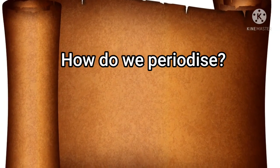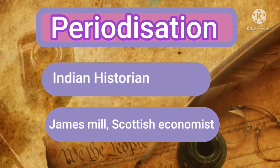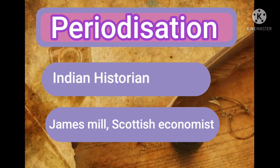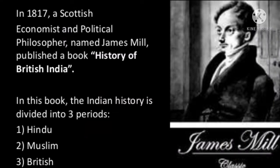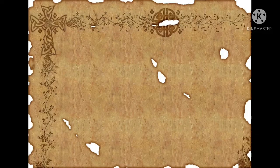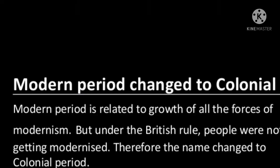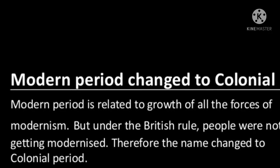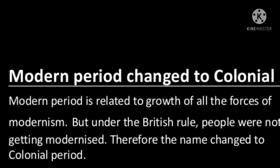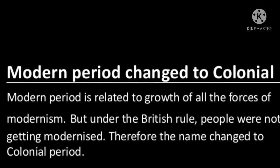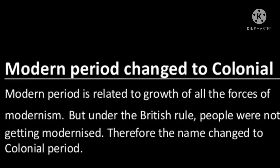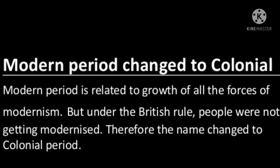How do we periodize? The periodization of history was done by Indian historians or James Mill. According to James Mill, the periodization of history is divided into ancient, medieval, and modern. The modern period is also known as the colonial period. It is because the modern period is related to the growth of all the forces of modernism. But under British rule, people were not getting modernized, therefore the name changed to colonial period.